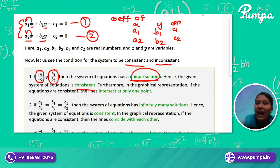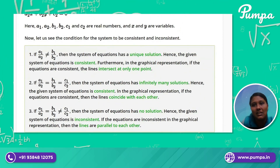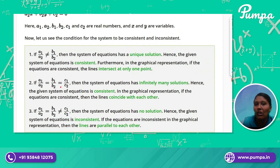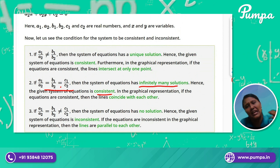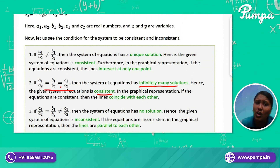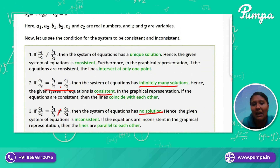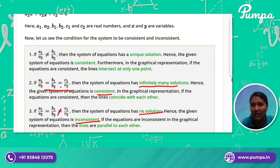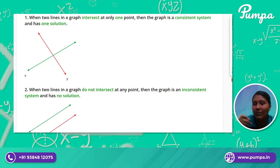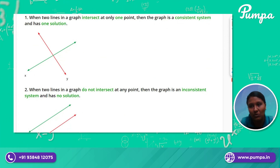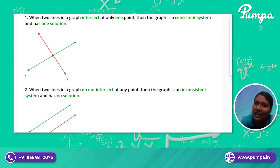If A1 by A2 is equal to B1 by B2, then you have to check the ratio of the constants: C1 by C2. If C1 by C2 is also equal, then the system is consistent and has infinitely many solutions. If C1 by C2 is not equal, then there is no solution — the system is inconsistent. If we solve the equations and graph them, we get straight lines.